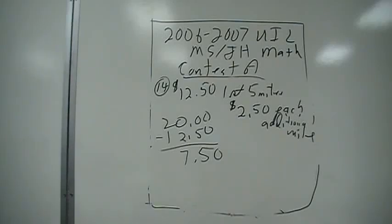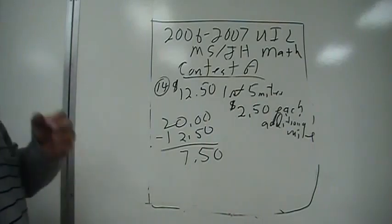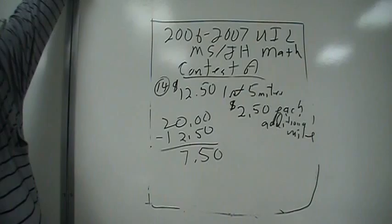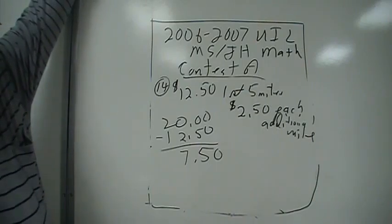For number 14, this costs $12.50 for the first 5 miles on this taxi and then $2.50 for each additional mile. And you want to know how far you can go on $20.